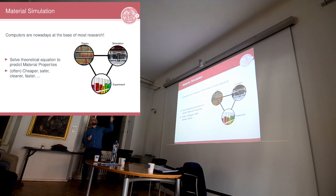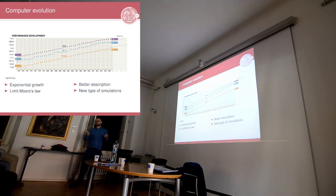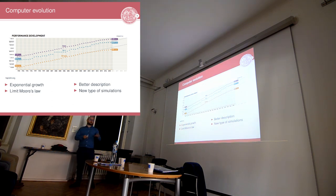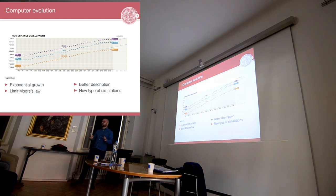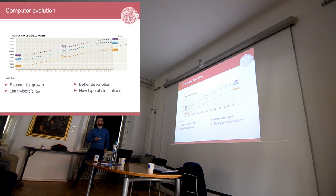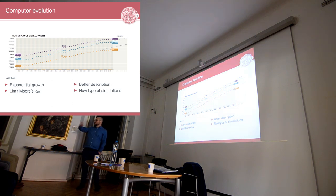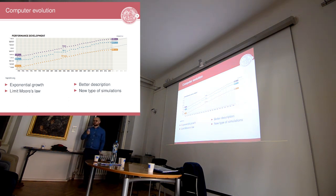So, how did this model of simulation happen in material science? Computer power, shown on a logarithmic scale, grew exponentially. This chart shows the top 500 supercomputers in the world over the last 20-something years — the yellow line is the slowest of the top 500, the purple one is the sum, and the middle one is the top supercomputer.